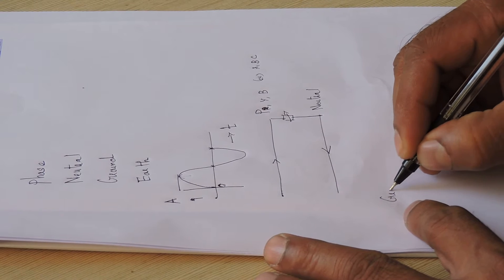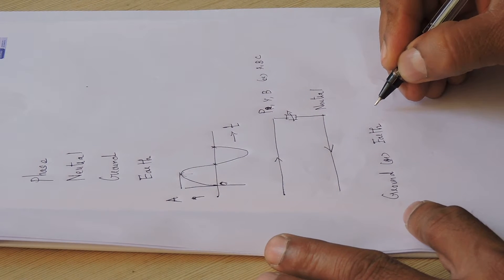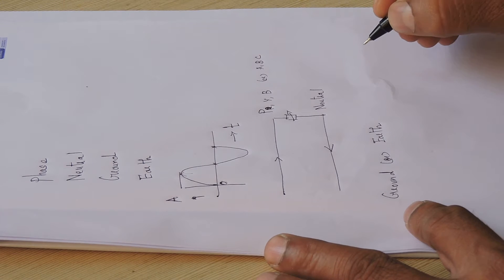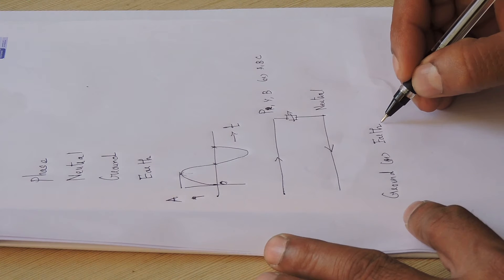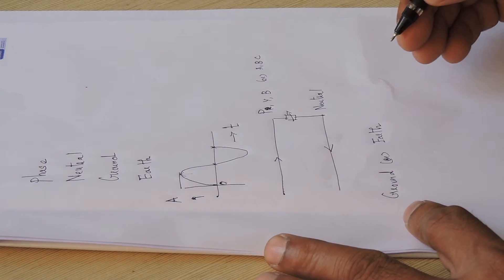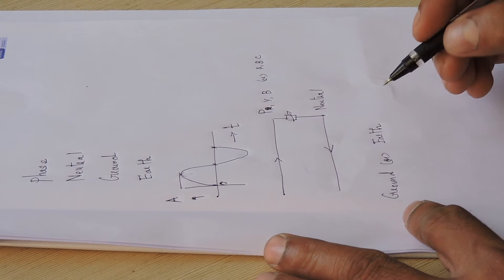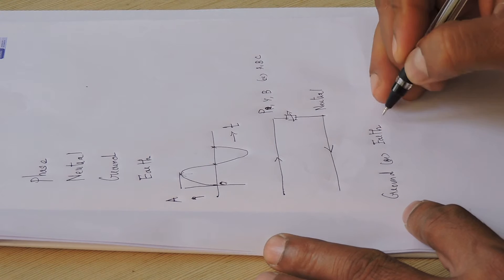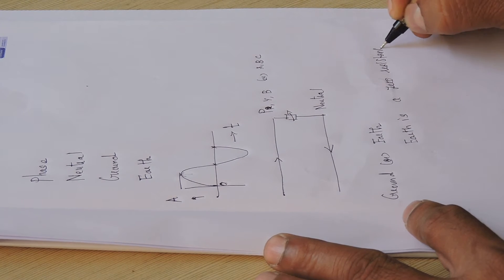Coming to ground or earth: ground and earth are almost similar, where it acts as a zero resistance path — or very, very negligible minimum resistance path. Earth is the zero resistance path, whereas neutral is the minimum resistance path. Normally, earth is the third conductor in any circuit, which will be connected to the outer surface of the electrical equipment or instrument. Whenever there is a fault or anything goes wrong, the excess leakage current will pass through the earth conductor. Earth is a zero resistance path.